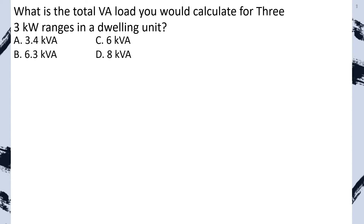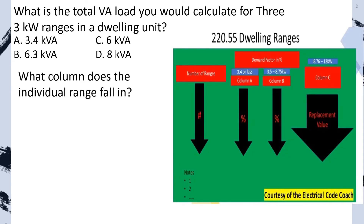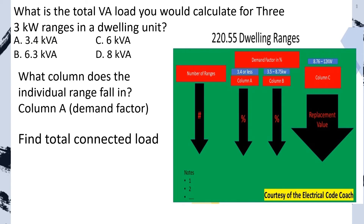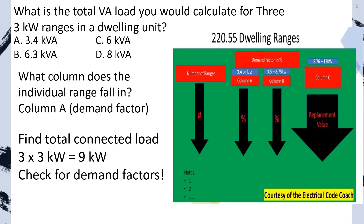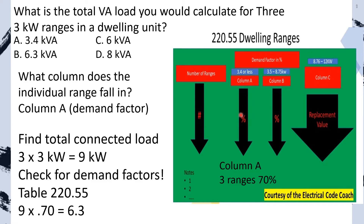What is the total VA load you would calculate for three 3 KW ranges in a dwelling unit? First question: what column does our individual range fall in? Ours falls into column A because the individual range is 3 KW, so we know we're going to be doing a demand factor. Find our total connected load: 3 multiplied by 3 KW equals 9 KW. Now we check for demand factors. We start on the left-hand side of the table, find our number of ranges, and cross over to find the demand factor for three ranges in column A, which is 70%. We take our 9 KW multiplied by our demand factor to get our new reduced load, and we select B.